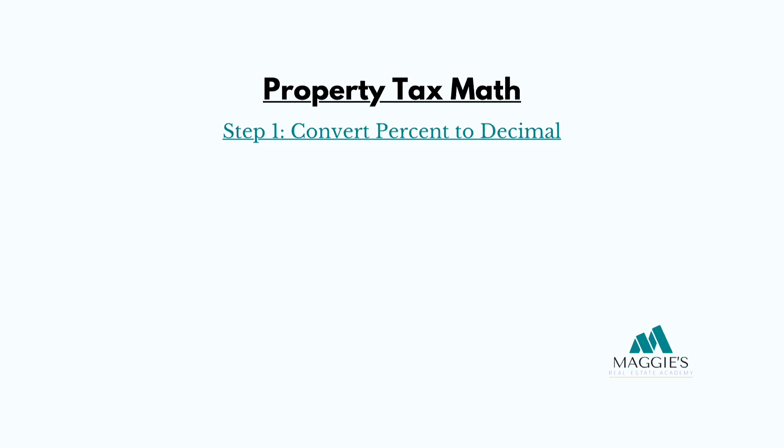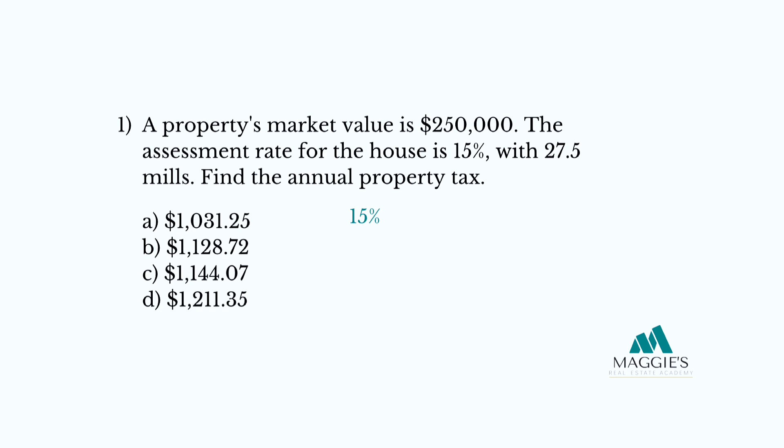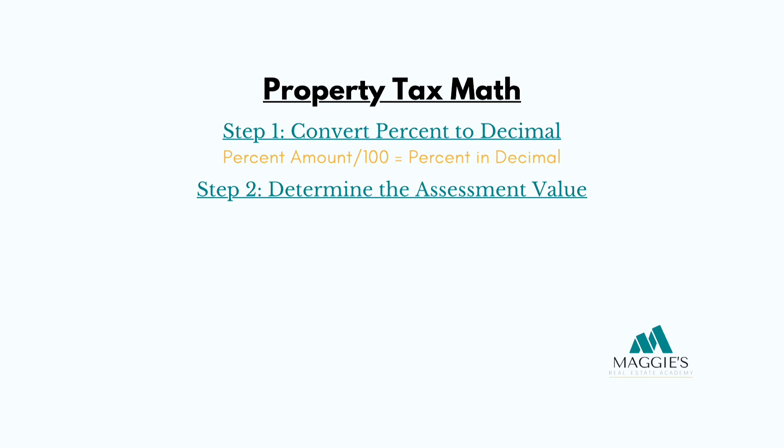Step one: convert the percent amount into a decimal. You should always convert the percent into a decimal when working on any percent problem. Divide that percent amount by 100. So 15 divided by 100 equals 0.15. Now we're ready.